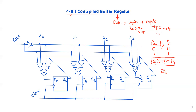Next, for the controlled buffer register, we have an actual buffer register with external inputs. The flip-flop input data comes from external inputs. We have a 4-bit buffer register, so there are 4 bits of external input data: X0, X1, X2, X3.